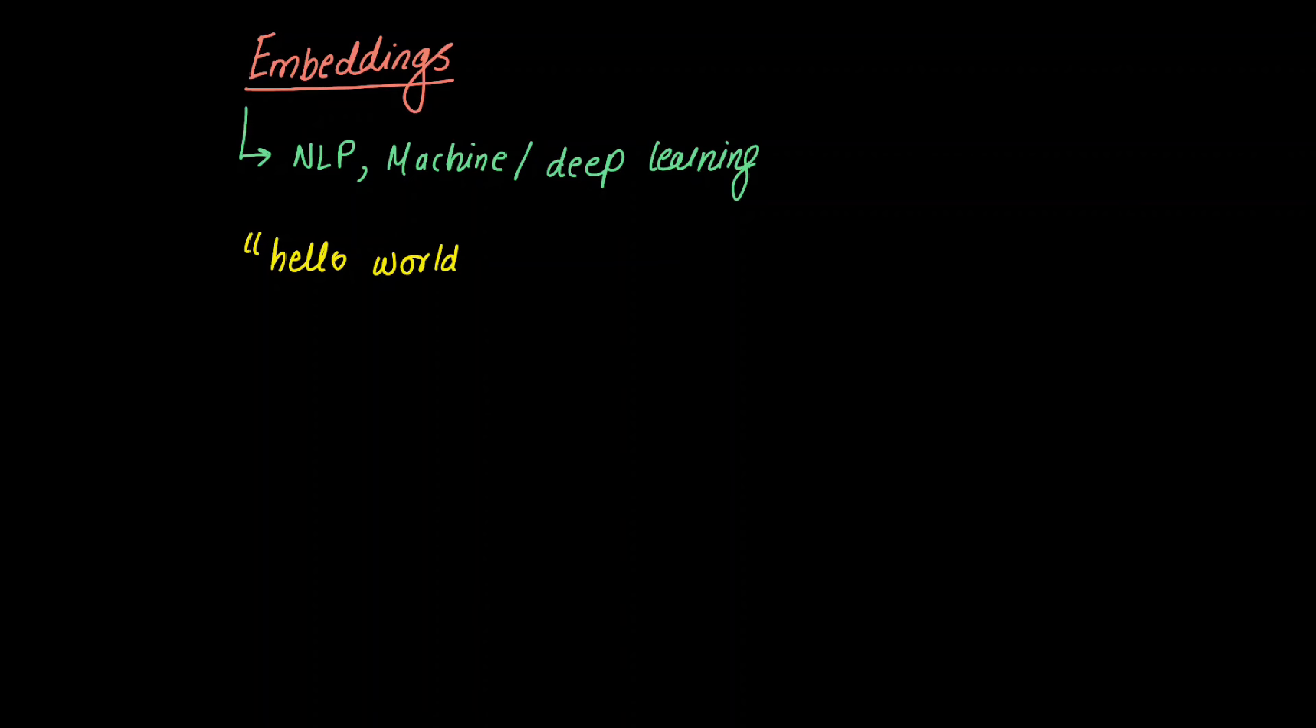So the best way would be to describe it through an example. Let's say I have a string called "hello world". Now I know the semantics of this particular sentence because we have learned those semantics over time through language and learning through speaking. But computers, they only understand zero and ones.